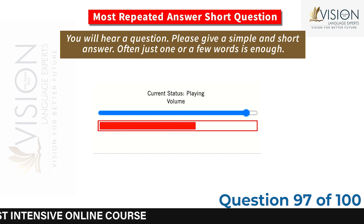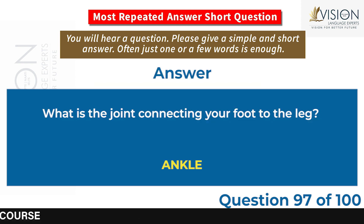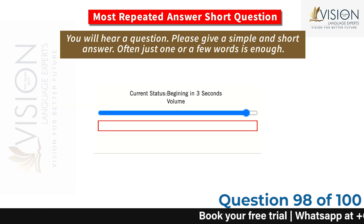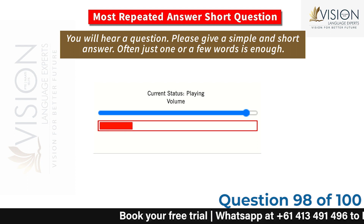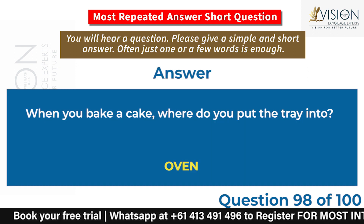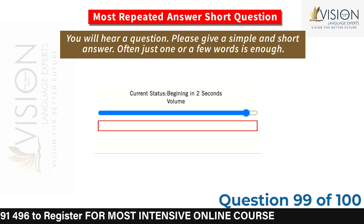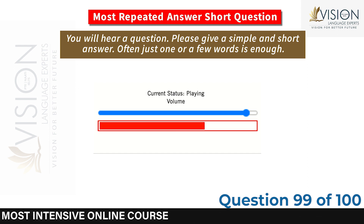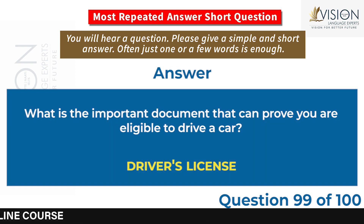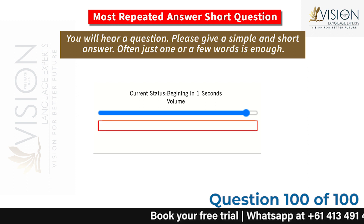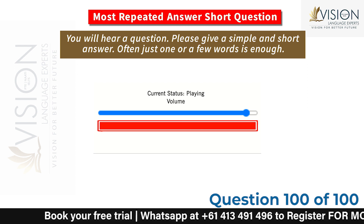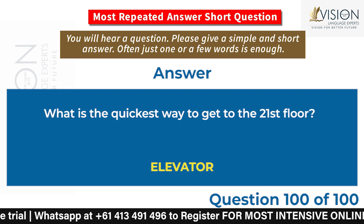What is the joint connecting your foot to the leg? Ankle. When you bake a cake, where do you put the tray? Oven. What is the important document that can prove you are eligible to drive a car? Driver's license. What is the quickest way to get to the 21st floor? Elevator.